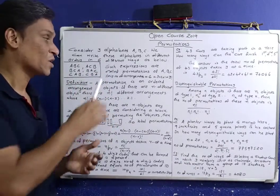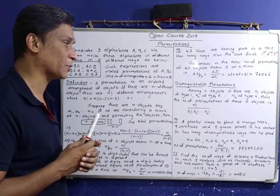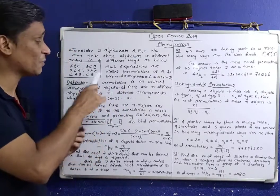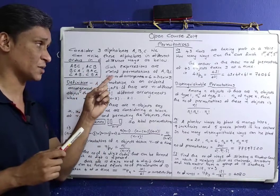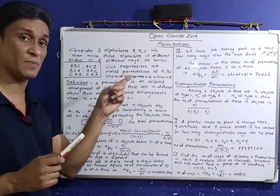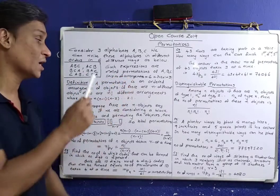Such expressions are called permutations of A, B, C. Then there are 6 arrangements — such expressions are called permutations of A, B, C, among alphabets.